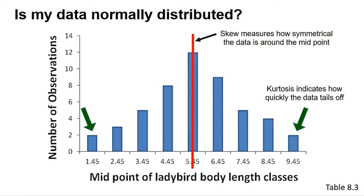Using these three measures, we can at least give some justification for using a parametric test to analyse our data, even if we cannot state with absolute certainty that our data set is normally distributed.